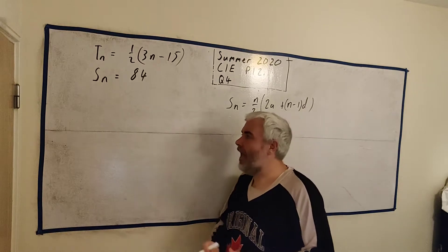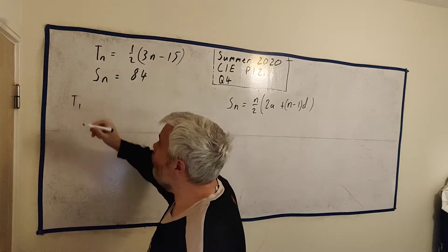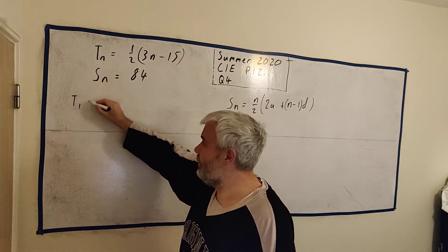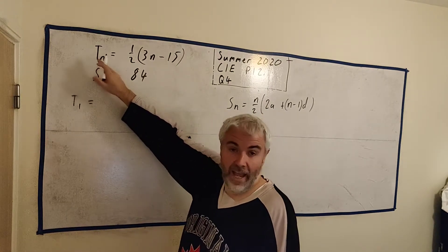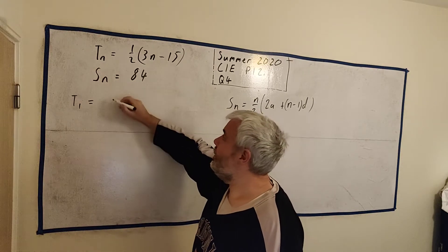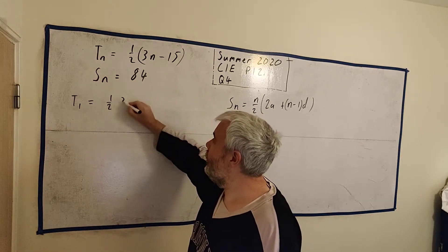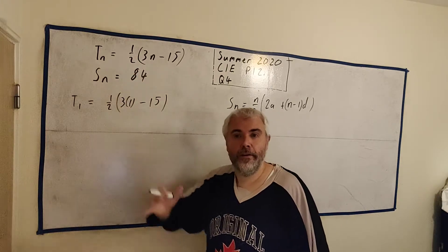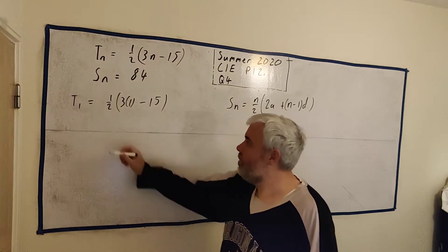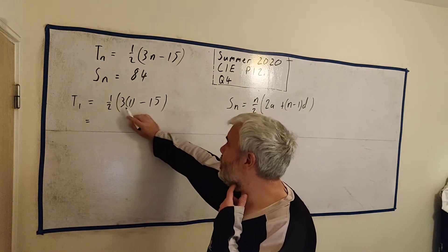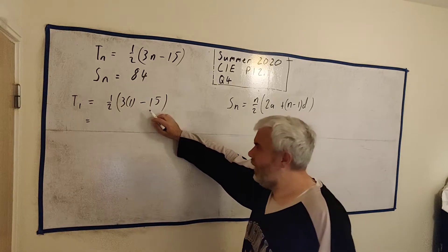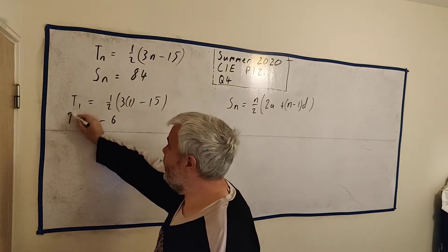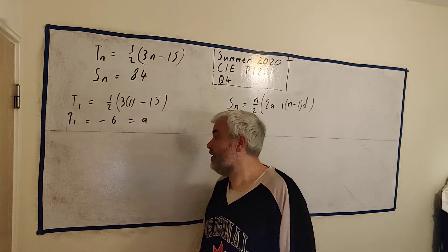So we can use this and we now know it equals 84. And if we know what A is and we know what D is, all we're left with is N. So that's probably going to be the easiest way. So let's find out what A is. A is the easiest one to find. It's T1. T1 is the same as A. And we know what T1 is because they tell us. They tell us T any number. T1 is equal to a half times 3 times 1 minus 15 because n is 1. So this is equal to 3 minus 15 is minus 12. So this is equal to minus 6. T1 equals minus 6 or A equals minus 6.